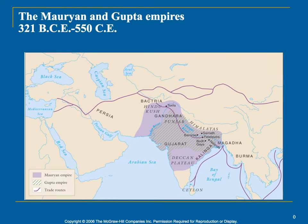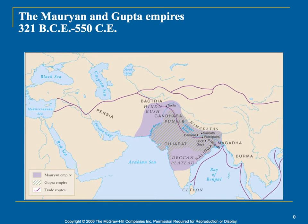You essentially have two empires that are important during this time period. They're both labeled at the very top — one's called the Mauryan Empire and the Gupta Empire. As you can see, they're both located in what is known as India today. You can see trade routes going to the Persian Empire and trade routes going to China, and this will eventually be known as the Silk Road, as we'll talk about a little bit later.